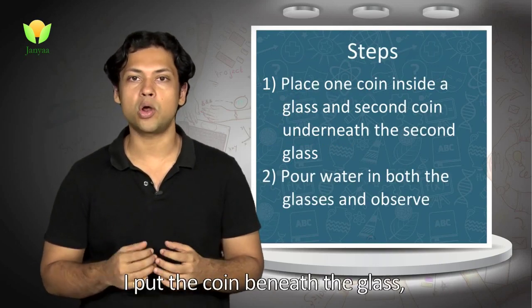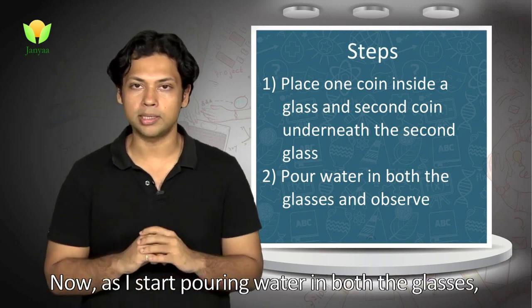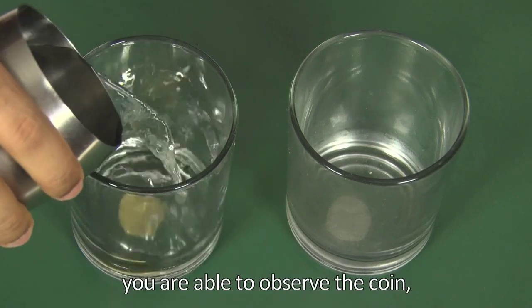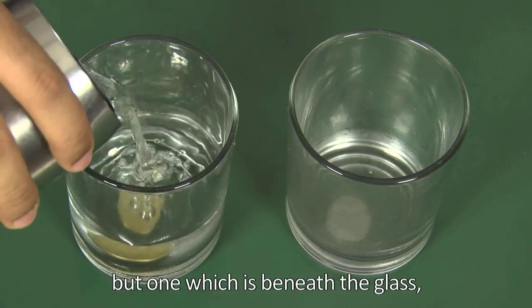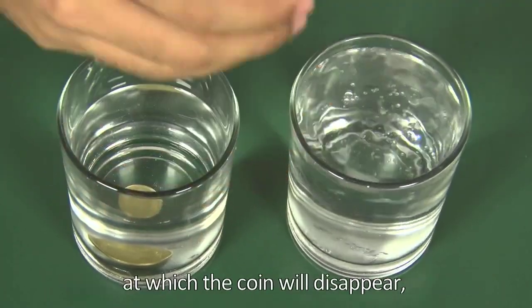Now as I start pouring water in both of the glasses, you see that when the coin is inside the glass you're able to observe the coin. But the one which is beneath the glass, what will happen is there will be an angle at which the coin will disappear.